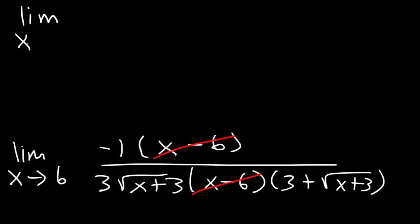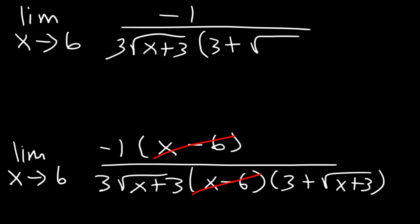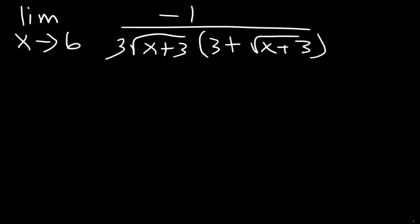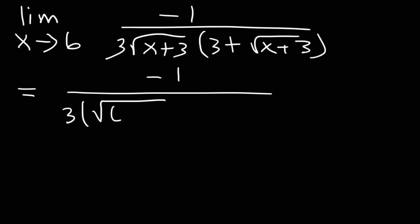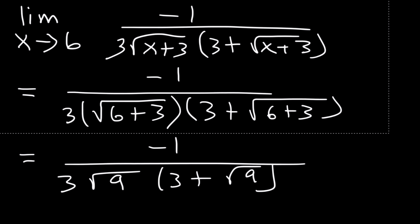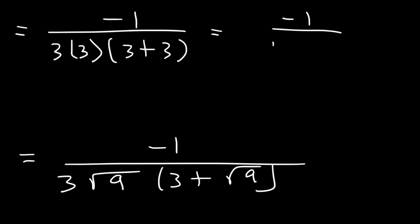So now we're left with the limit as x approaches 6 with a negative 1 on top, divided by 3 square root of x plus 3 times 3 plus the square root of x plus 3. Now we can use substitution. So this is equal to negative 1 divided by 3 times the square root of 6 plus 3 times 3 plus the square root of 6 plus 3. Now 6 plus 3 is equal to 9, and the square root of 9 is equal to 3. So we got 3 times 3 and then 3 plus 3. 3 times 3 is 9, 3 plus 3 is 6, and 9 times 6 is equal to 54.